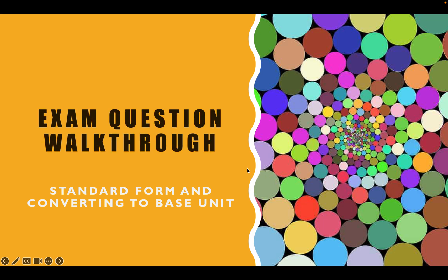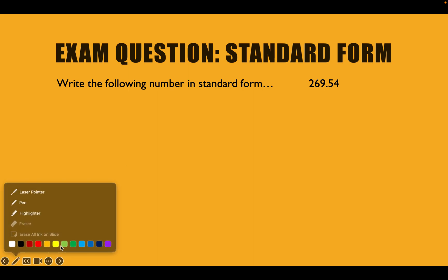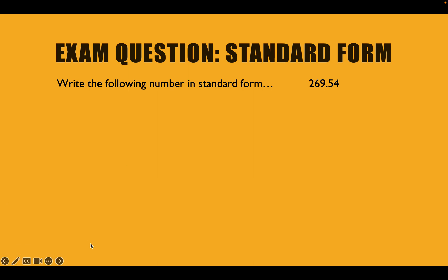Exam question walkthrough. We're going to do three questions — two on standard form and one on converting to base units — over three videos. This is the first question we're going to do together. We're being asked to write the following number in standard form. The number we've been given is 269.54.